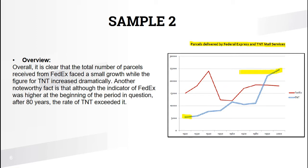TNT grows from the bottom all the way up — about 20,000 increase — while FedEx shows only about a 2,000 increase. That's why I used the contrast word 'while': the number of TNT parcels is increasing dramatically, and here is only a small growth for FedEx.